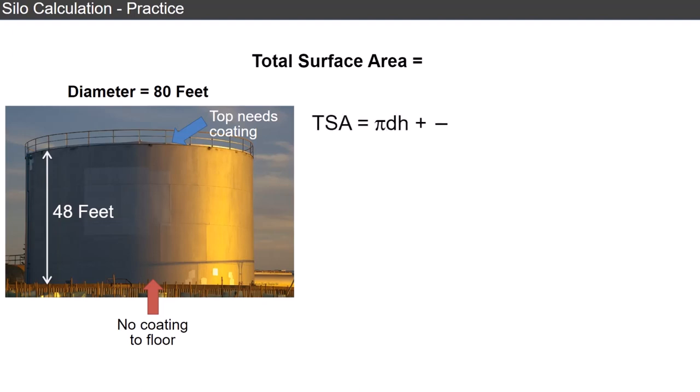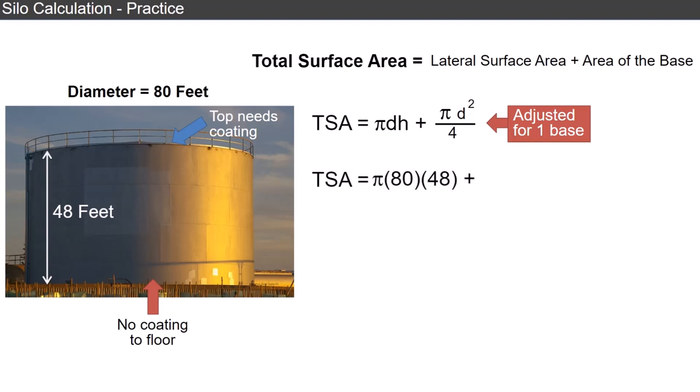We'll start with the total surface area formula, which is the lateral surface area plus the area of the circle on top. We adjust the formula to remove the circular bottom from our calculation. Our starting formula is that the total surface area for this cylinder equals pi times diameter times height plus pi times diameter squared divided by 4. Then we plug in 80 for the diameter and 48 for the height. This gives us 12,063.71579 plus 5,026.548246.